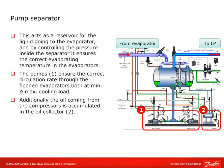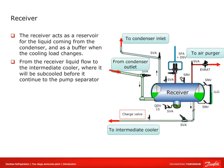The pump separator acts as a reservoir for the liquid going to the evaporators. By controlling the pressure inside the separator, it ensures the correct evaporating temperature. The pumps ensure the correct circulation rate through the flooded evaporators at both minimum and maximum cooling load. Additionally, oil from the compressors accumulates in the oil collector. The receiver acts as a reservoir for liquid coming from the condenser and as a buffer when cooling load changes. From the receiver, liquid flows to the intermediate cooler where it is sub-cooled before continuing to the pump separator.